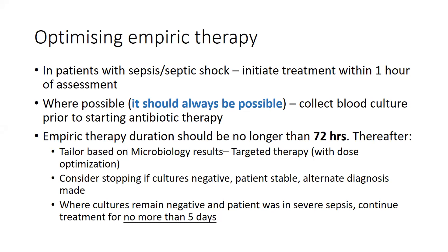If cultures are negative and the patient is stable or an alternate diagnosis has been made, we need to stop empiric antibiotics. Sometimes cultures are negative but the patient initially presented with severe sepsis. In this scenario, one needs to assess whether source control was achieved, how early source control was obtained, the patient's clinical response, and the biomarker trend. The aim is to use as short a course as possible — often five to seven days of therapy.